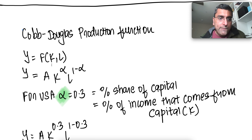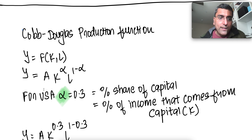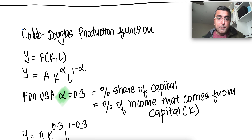If we expand that further, as we saw in part one, it's y = A · K^α · L^(1−α), where A is productivity, K is capital, L is labor, and alpha is the percentage share of capital.